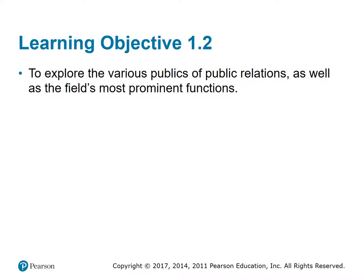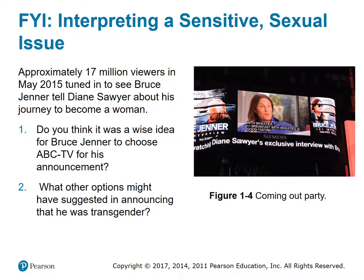Learning objective 1.2: to explore the various publics of public relations as well as the field's most prominent functions. Interpreting a sensitive sexual issue: approximately 17 million viewers in May 2015 tuned in to see Bruce Jenner tell Diane Sawyer about his journey to become a woman. Do you think it was a wise idea for Bruce Jenner to choose ABC TV for his announcement? What other options might you have suggested? Bruce Jenner was criticized for maximizing publicity of what some people felt should have been a private decision. Jenner also agreed to be the subject of a reality show following his transition. Others commended him for bringing national attention to the transgender issue.